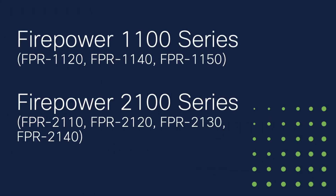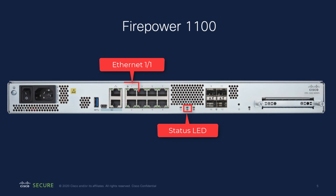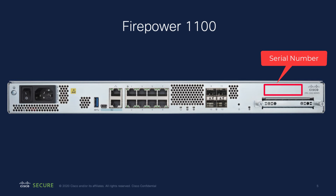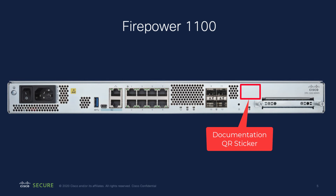You may have received a Firepower 1100 series or 2100 series device instead of a Firepower 1010. If you did, take a moment to familiarize yourself with these devices. The remainder of the video will show the lights of the Firepower 1010, but the concepts are the same for all device types. On the Firepower 1100, here are the status LED, Ethernet port 1-1, and the console ports. If you need it, the serial number for the 1100 series devices will be found on a sticker here as well as on the bottom of the device. The QR code sticker pointing to low-touch provisioning documentation will be here.